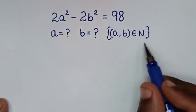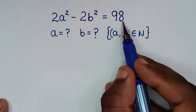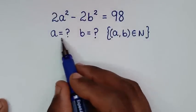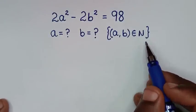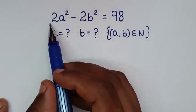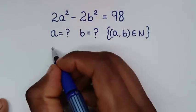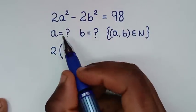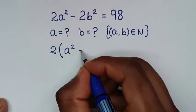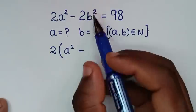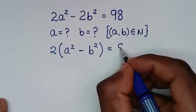Welcome to this math problem: 2a squared minus 2b squared is equal to 98. We need to find the values of a and b such that (a, b) is an element of the natural numbers. In the first step, on the left side, 2 is common, so we take 2 out of the bracket: 2(a squared minus b squared) equals 98.